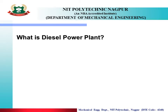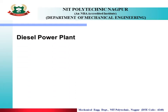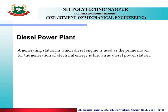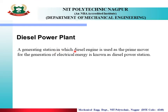The question is: what is a Diesel Power Plant? Think and revise from the last lecture. A Diesel Power Plant is a generating system in which a diesel engine is used as the prime mover for the generation of electrical energy. It is also known as a Diesel Power Station — a generating station where diesel engines are used as the prime mover for electricity generation.